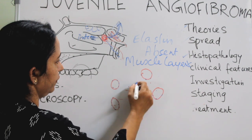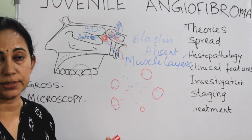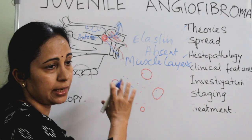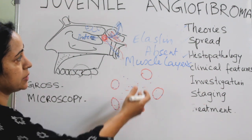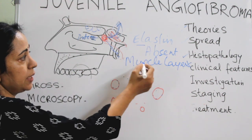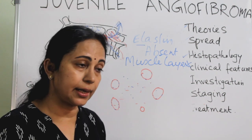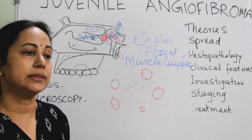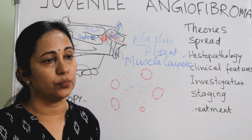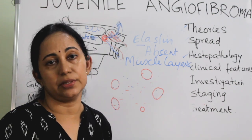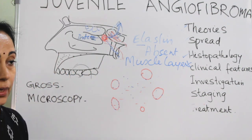There are varying amounts of vascular channels of different sizes, usually seen towards the periphery with central abundant fibrous stroma. This endothelium lacks elastin fibers, and the muscle layer is either absent, pad-like, or circumferential. Because of this, these blood vessels cannot contract, resulting in profuse bleeding — the classic presenting symptom of JNA.